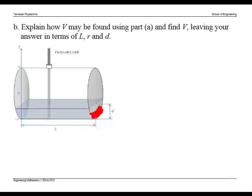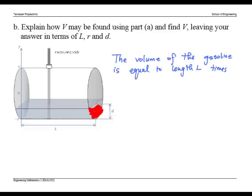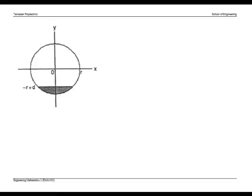Notice that this is the cross-sectional area of the required volume. Since we know that the length is L, the volume of the gasoline is equal to the length L times the area in the shaded region. This is the side view of the area. The equation of the circle is given by x squared plus y squared equals r squared.